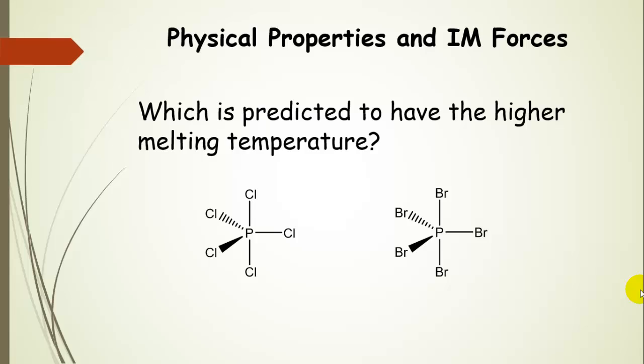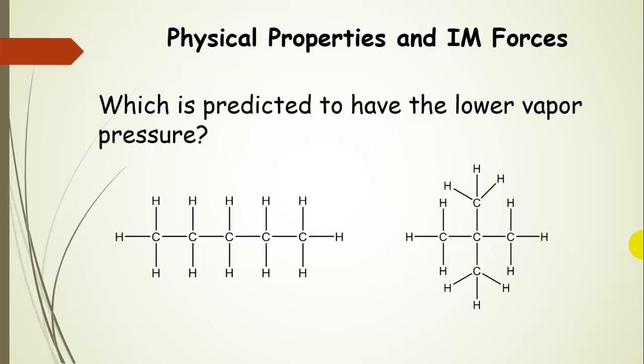Which of these two would be predicted to have the higher melting temperature? We already talked about phosphorus pentabromide and found it has higher dispersion forces, stronger attractions than phosphorus pentachloride. So we would expect this molecule to have the higher melting temperature, and it does.